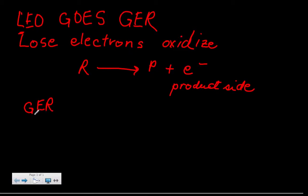Grrr, gain electrons reduce. I'm just going to write that out. Gain for the G, electrons E and R, and the grrr is reduced. And that means the electrons are going to be on the reactant side. The reactants are picking up the electrons.